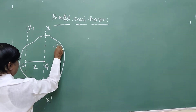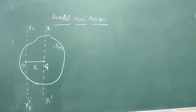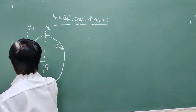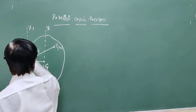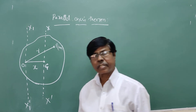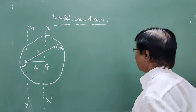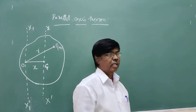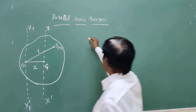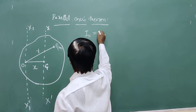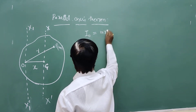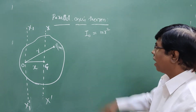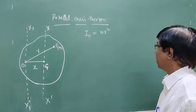Particle P has mass M. The distance from O to P is R. The moment of inertia of particle P about O is I₀ = MR², where M is the mass of the particle and R is the distance between the axis of rotation and the particle.